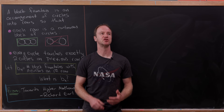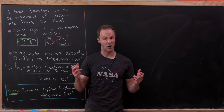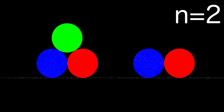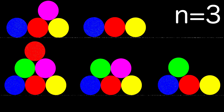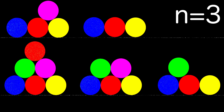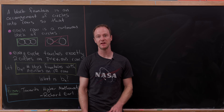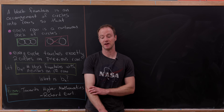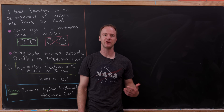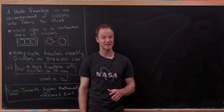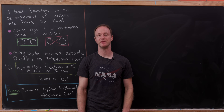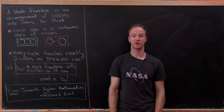It's pretty easy to draw pictures for small values of n: b_1 = 1, b_2 = 2, and b_3 = 5. But even after that it's hard to keep track of all possibilities. You might figure out that b_4 = 13, but it's easy to miss some. So we need some other strategy.